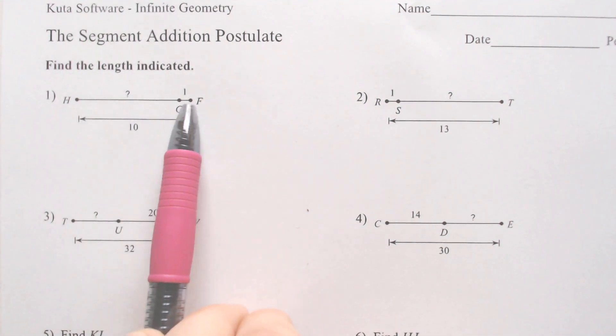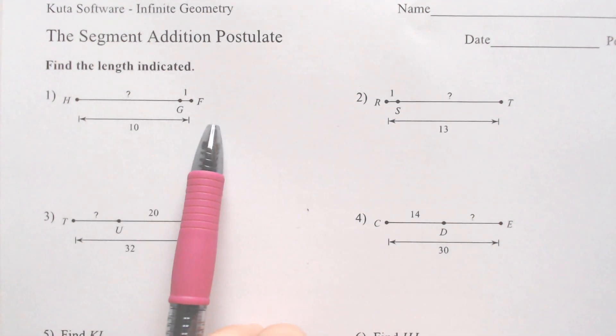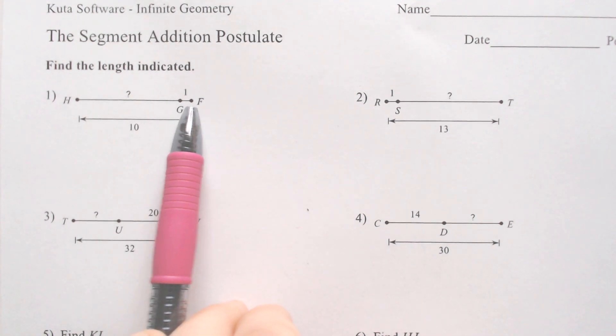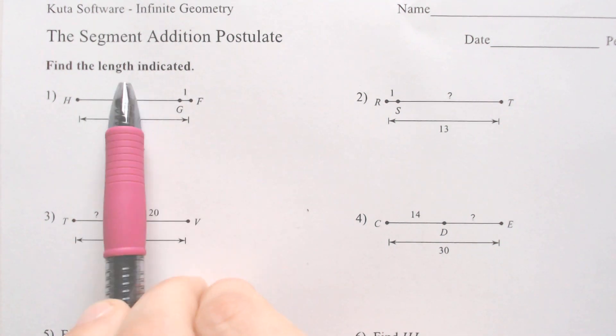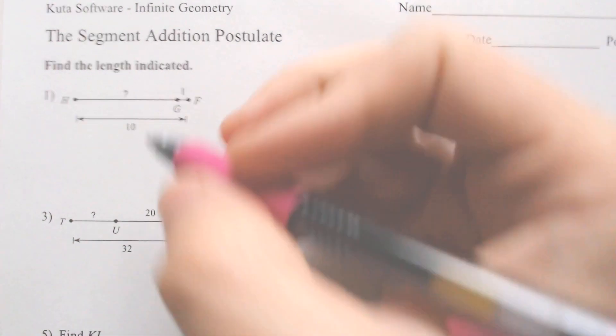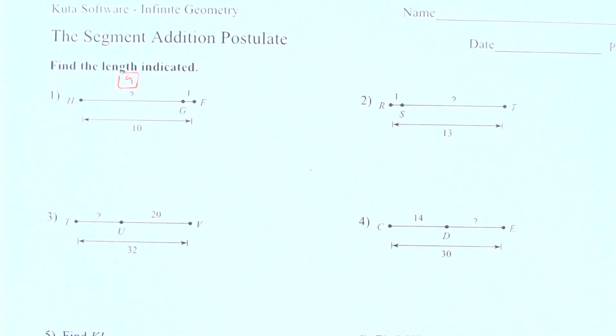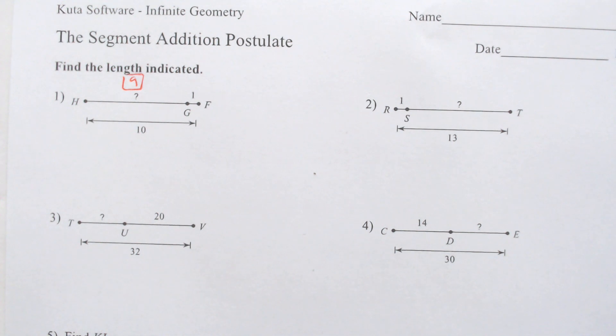Notice how from H to F, the entire way across is 10, and we got 1 from G to F, which means what do we have to add with 1 to get to 10? And the answer to that is 9. Now, some of your brains will be able to work that way, and some of you might struggle with that, and that's okay.